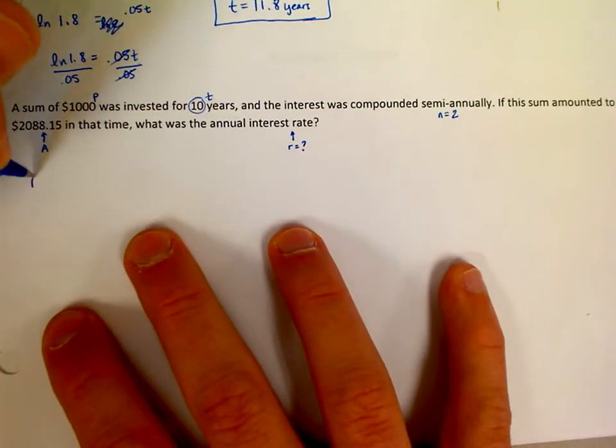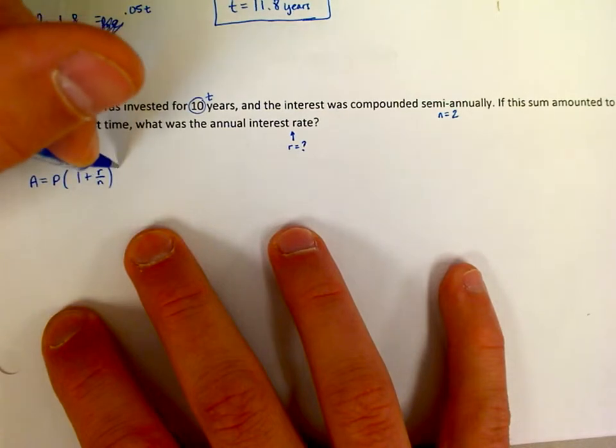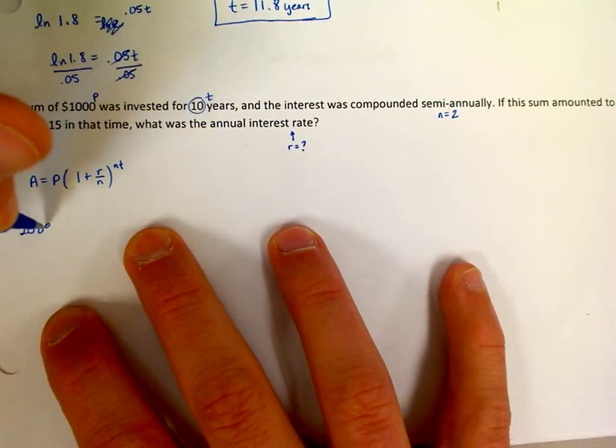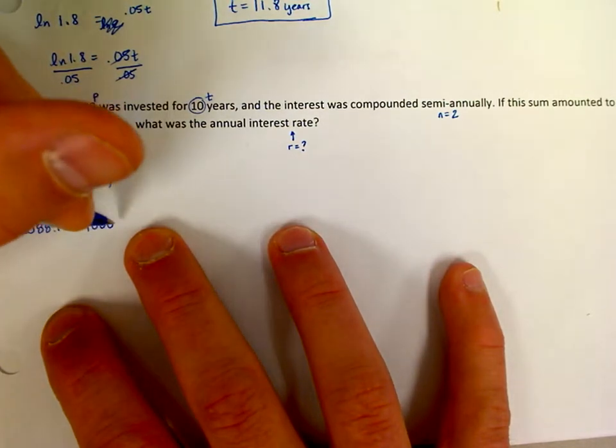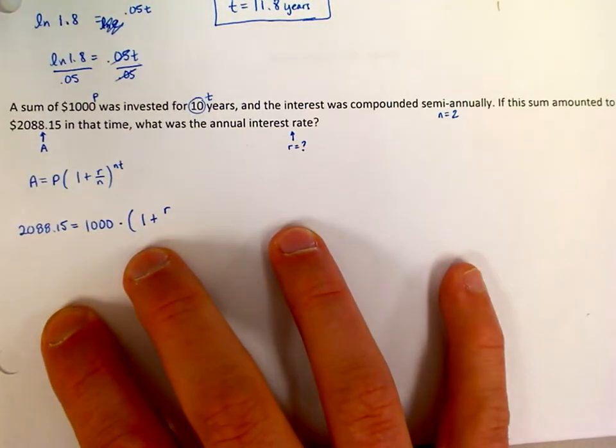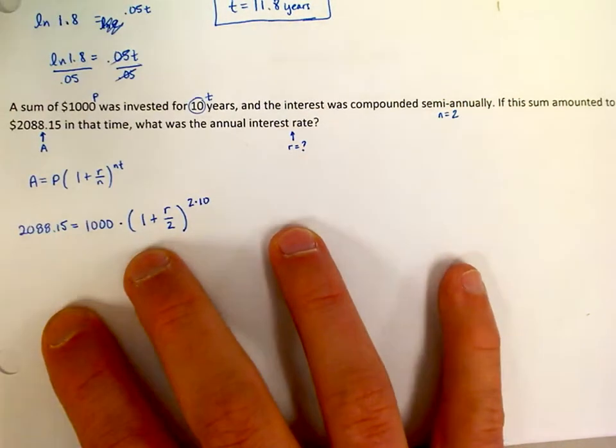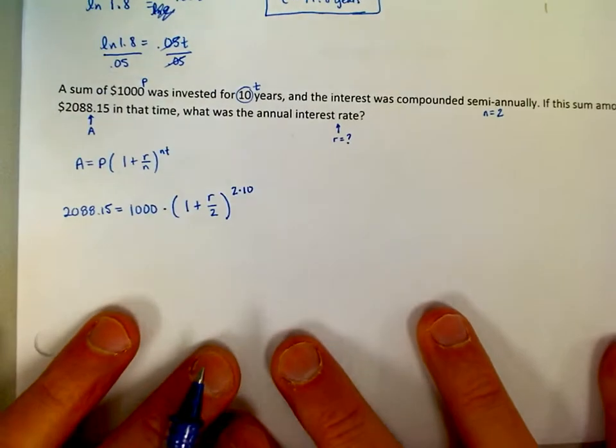Our formula then, A is equal to P times 1 plus R over N to the NT, will now become this. 2,088.15 is equal to the starting amount of 1,000 times 1 plus the R that I don't know, divided by 2 because it's semi-annually, raised to the 2 times 10 power. Now let's start simplifying things as quick as we can. Ready? Here we go.